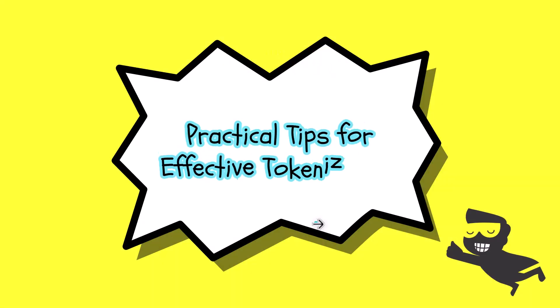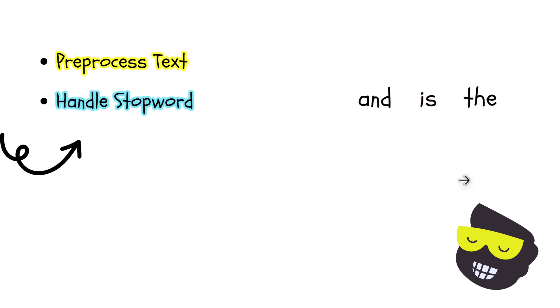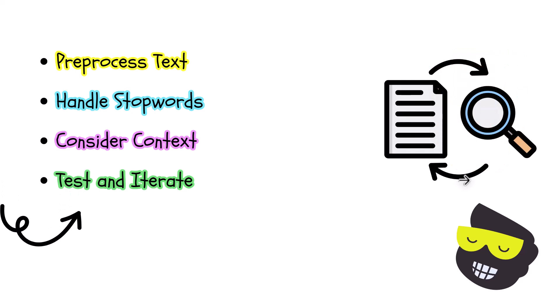For practical tips on effective tokenization: preprocess and clean the text before tokenizing — remove unnecessary characters and convert to lowercase. Handle stop words like 'the' and 'is,' as removing them is usually helpful depending on the use case. Consider the context in which tokenization is used, since different tasks may require different strategies. And always test and iterate — this is not a one-size-fits-all solution, so you need to think about it and plan ahead.